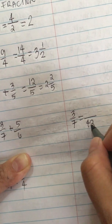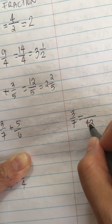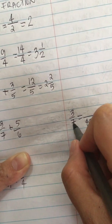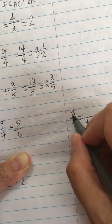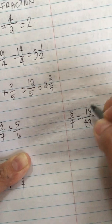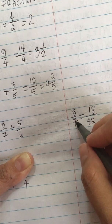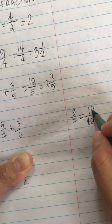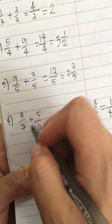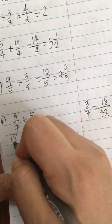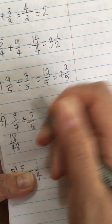So to do this, we divide 42 divided by 7, and we get 6. And 6 times 3 is equal to 18, so 3 over 7 is the same as 18 over 42.